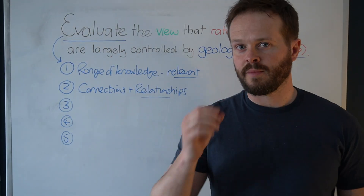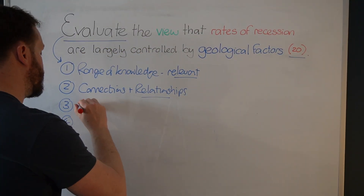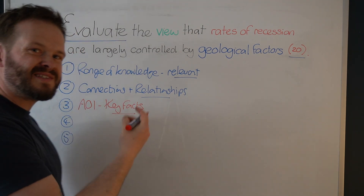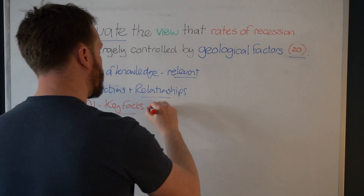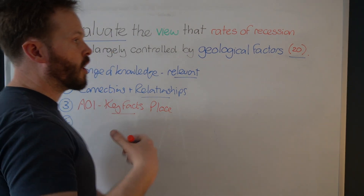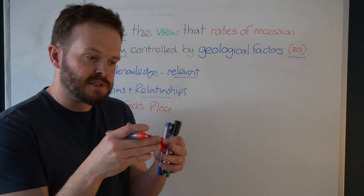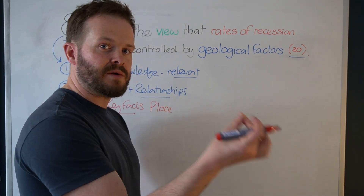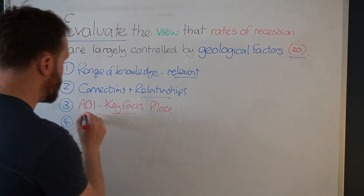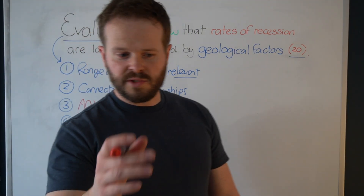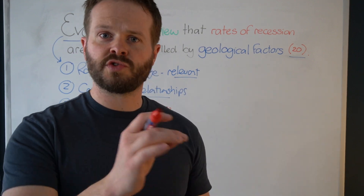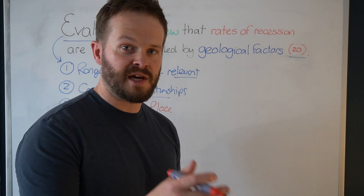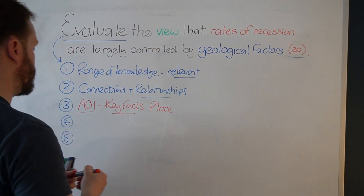Number three — and this is when we can start to think about you getting into level three: AO1. This is your key facts. When an examiner sees a number, a place, a rock type, or any specific bit of key terminology — a specific fact about a specific place — you're going to get your AO1 credit. Aim for one or two specific facts with reference to specific places in each of your paragraphs. If you're getting that, you're hitting top level.